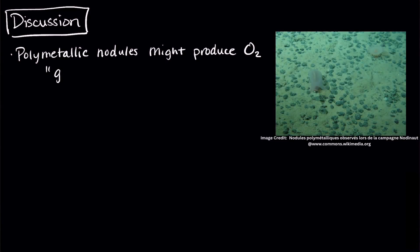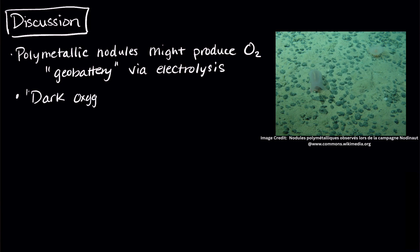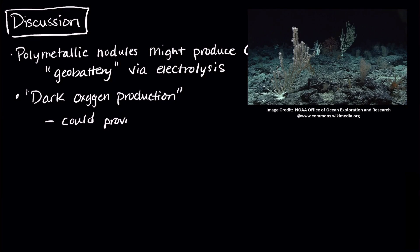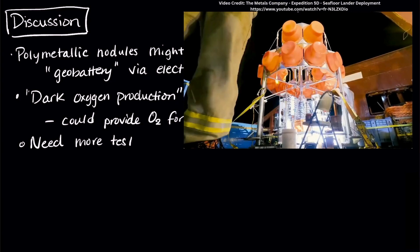So, what does all this mean? Let's discuss. First, polymetallic nodules might produce oxygen. They could act like a geobattery and break apart water through electrolysis. We call this production of oxygen dark oxygen production because light's not involved. This oxygen could potentially provide extra oxygen for organisms on the seafloor, but we need more testing to be sure.